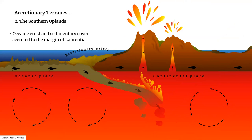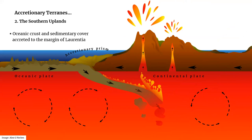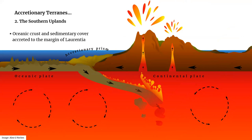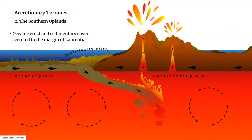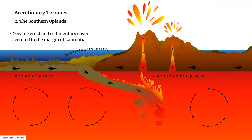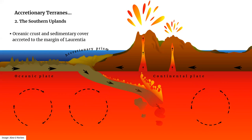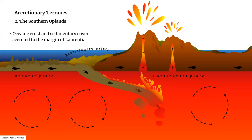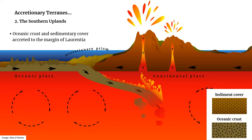The Southern Uplands originated in a similar way to the Ballantrae complex. Because the ocean floor has a variety of landforms, subduction is not a smooth process. As the oceanic crust was sinking under the continental crust, successive slices of the ocean floor and overlying sediments were scraped off and gradually piled under the older slices already accreted to the continental margin. The result is known as an accretionary prism, in which the rock section is similar to that of an ophiolite, with the exception of the rocks of the upper mantle.